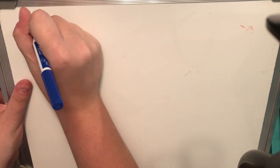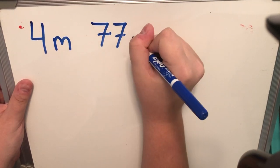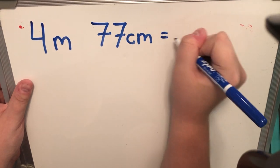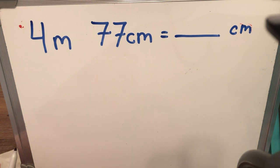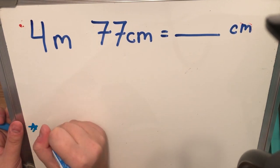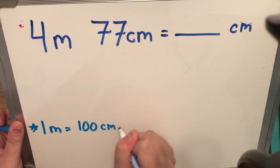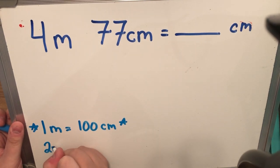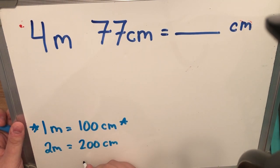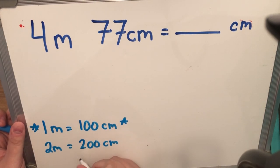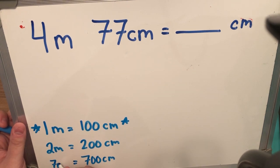So I have 4 m and 77 cm. And our job is to figure out, in centimeters, what this is worth. Now, our metric conversions. 1 m is worth 100 cm. And 2 m is worth 200 cm. Just showing you some examples. And 700 cm is worth 7 meters.